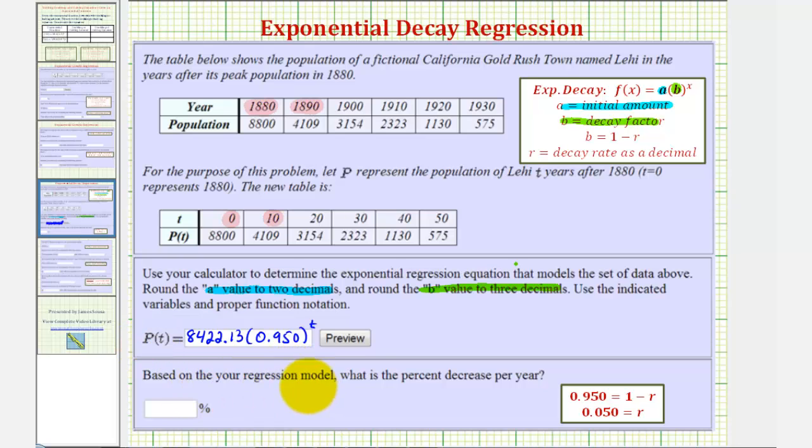Now based upon the model, what is the percent decrease per year? Well, the percent decrease per year would be the same as r, or the decay rate. So to find r, we take our base b, which in this case is 0.950, and set it equal to 1 minus r. We solve this equation for r, we'd subtract 1, divide by negative 1, giving us r equals 0.050.